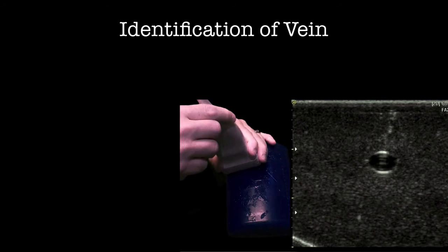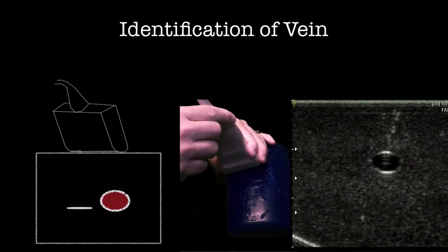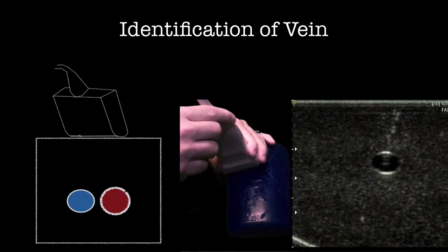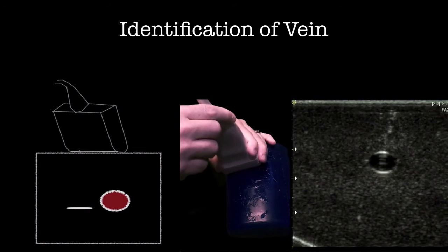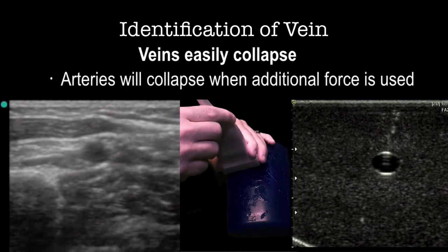A common mistake with this technique is misidentification of the artery and the vein. Veins can only be identified in short axis where they appear as a circle. The transducer is placed on top of the vein, and veins will collapse easily with pressure. Arteries will not collapse unless a lot of pressure is used.